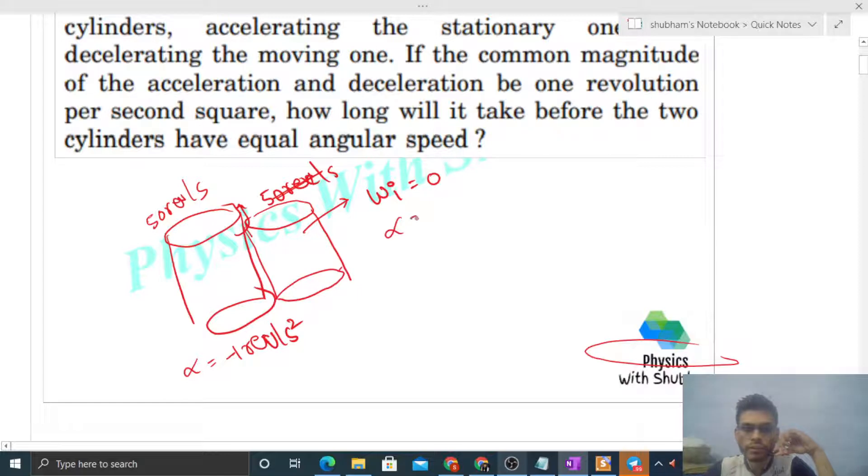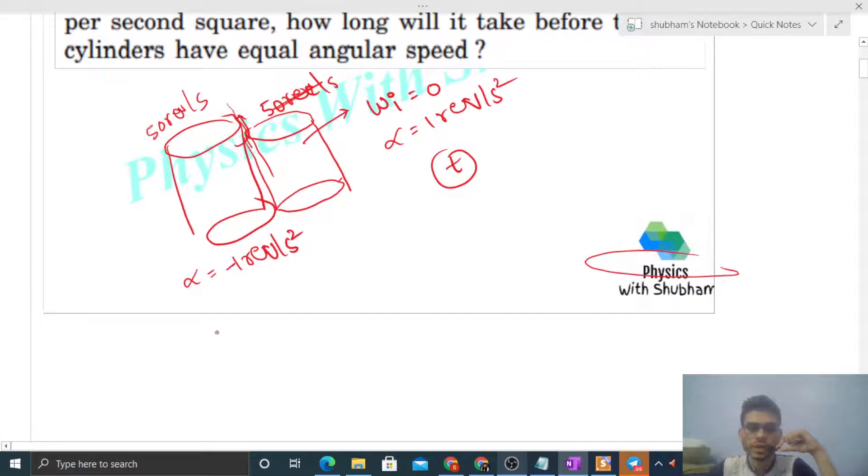Similarly, for the second cylinder, initial omega will be zero and alpha will be one revolution per second square, that is the acceleration. We have to find out after how much time both will move with a common angular speed. So let's say after time t they will start moving with a common velocity. At that time, the velocity of the first cylinder will be initial omega plus alpha times t, which is 50 plus minus one times t. This is the final angular velocity of the first cylinder. Similarly, final angular velocity of the second cylinder will be initial omega zero plus alpha, which is one times time. Now you can equate the final velocities of the two cylinders: 50 minus t equals t. From here you will get the value of time as 25.